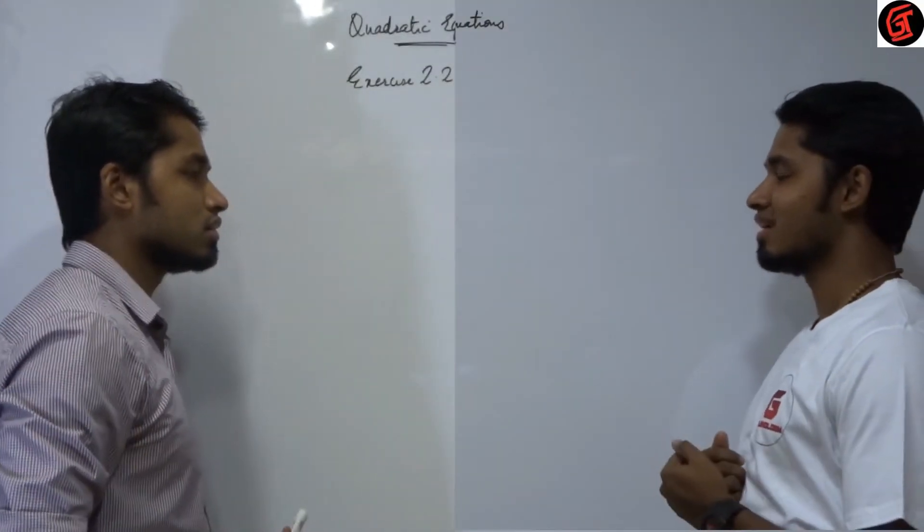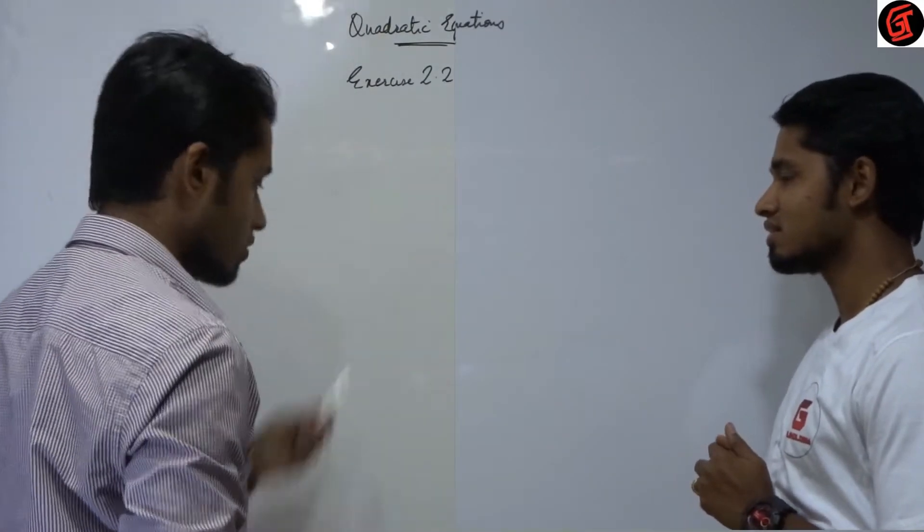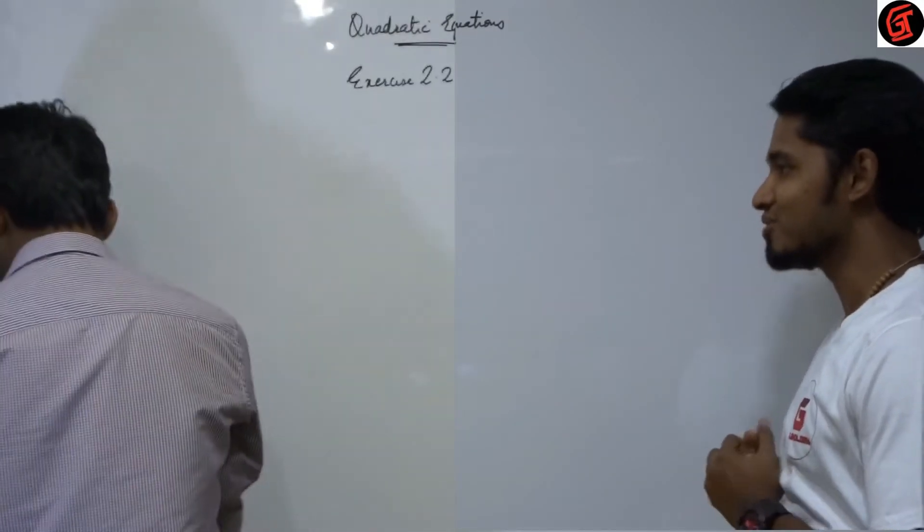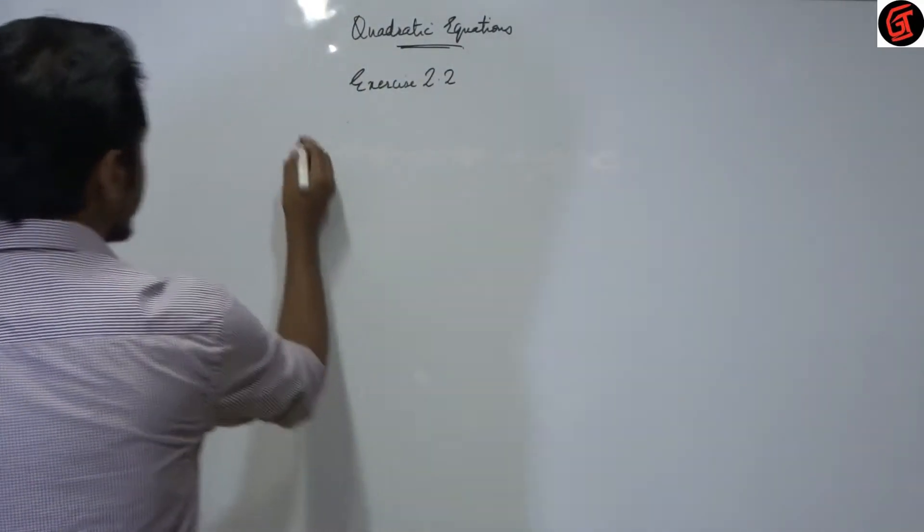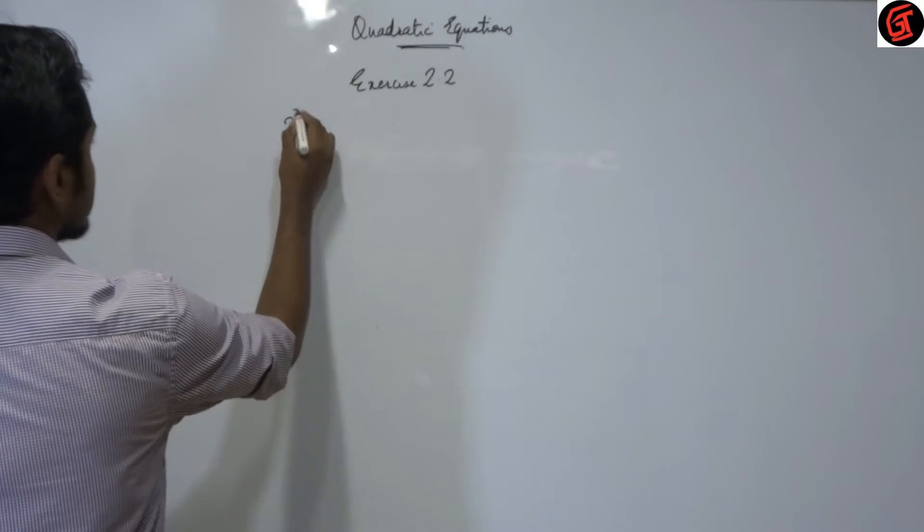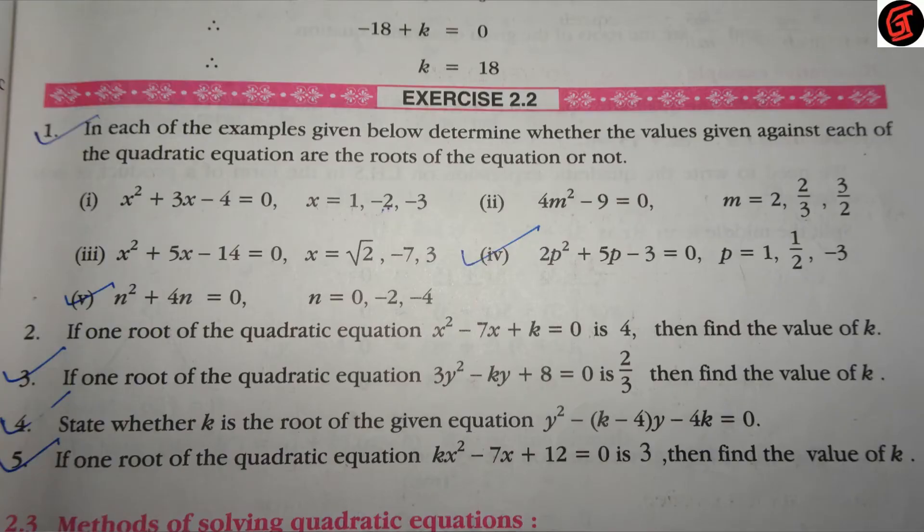Excuse me, sir. I wanted to know how to do the second part of this. Sure, I will do it right now. Thank you, sir. The second sum. Now what is the question telling us? If one root of the quadratic equation x square minus 7x plus k is equal to 0 is 4, then we will find the value of k.